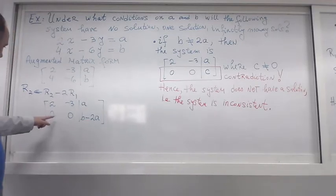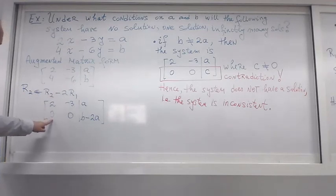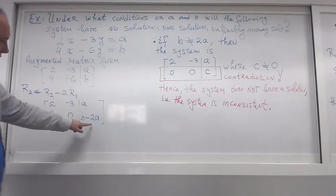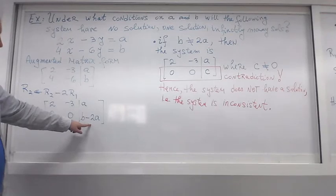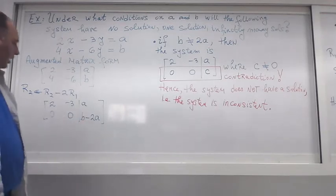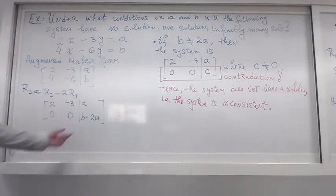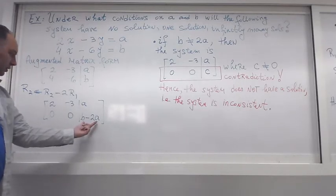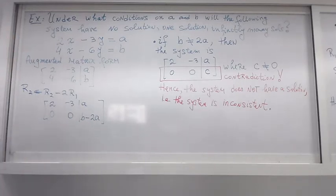Then I have the second equation saying zero times x₁ plus zero times x₂, which is zero, is equal to six. Well, that's not true. In that case, I will not have no solution at all. So if this expression here is different from zero, system doesn't have any solutions, so I need to be careful about it.